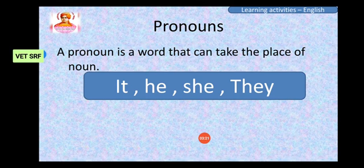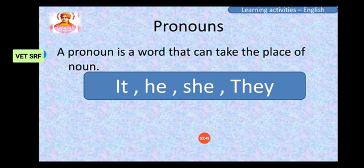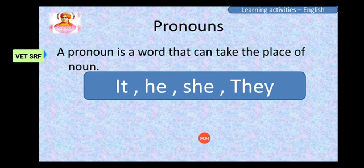I will give you one example. If I want to talk about Sachin Tendulkar: 'Sachin Tendulkar is an Indian former cricket player. Sachin Tendulkar is staying in Mumbai. Sachin Tendulkar is a famous cricket player all over the world.' Instead of repeating Sachin Tendulkar, we can use a pronoun: 'Sachin Tendulkar is an Indian former cricket player. He is staying in Mumbai.'